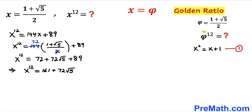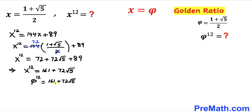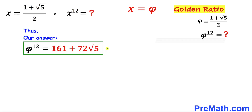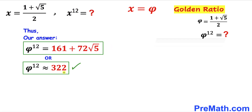Since x equals phi, our phi power 12 value turns out to be 161 plus 72 times square root of 5, which is approximately equal to 322. Thanks for watching and please don't forget to subscribe to the channel for more exciting videos.